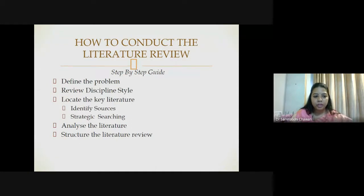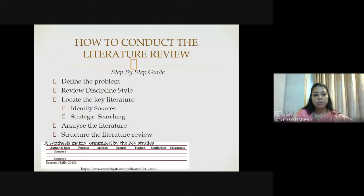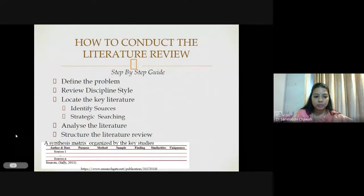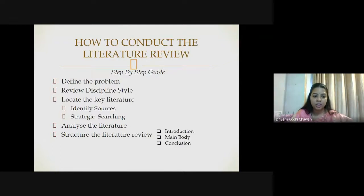Another important point after analyzing is synthesizing the literature. Giving it a proper structure is very important and this can be done through a synthesis matrix, which helps you understand what different articles you have read, what has been the purpose, what methodology was adopted by these authors, what were the strategies used and findings. Based on this, you can pinpoint a proper structure to your literature review, which should include at least three important aspects: an introduction, the main body, and a conclusion.